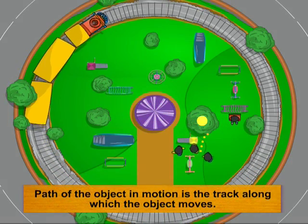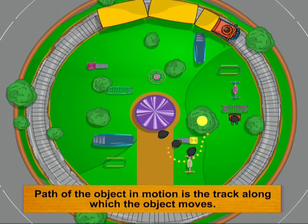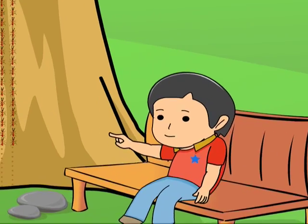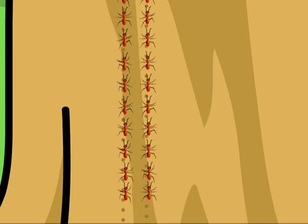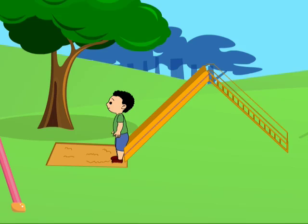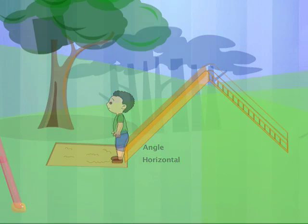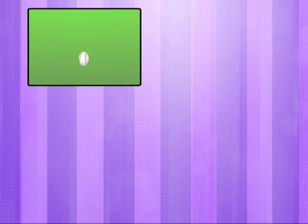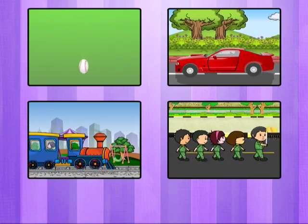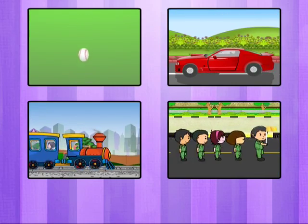The path of the object in motion is the track along which the object moves. Let's observe the paths of different moving objects. For example, these ants are marching in a straight line. This child sliding down is also moving in a straight line — the straight line path here is inclined to the horizontal at an angle. More examples: a ball moving up and down in the air, cars on a road, a toy train on a track, and soldiers marching — they all undergo straight-line motion.